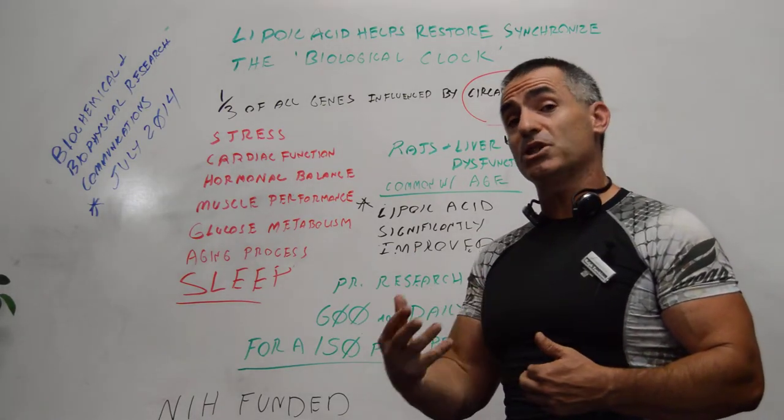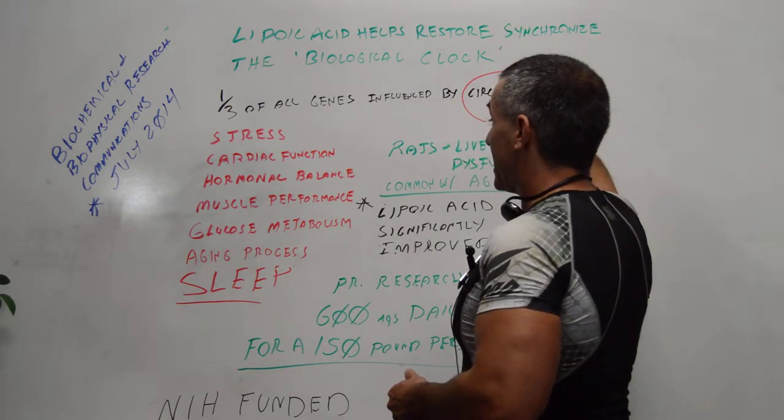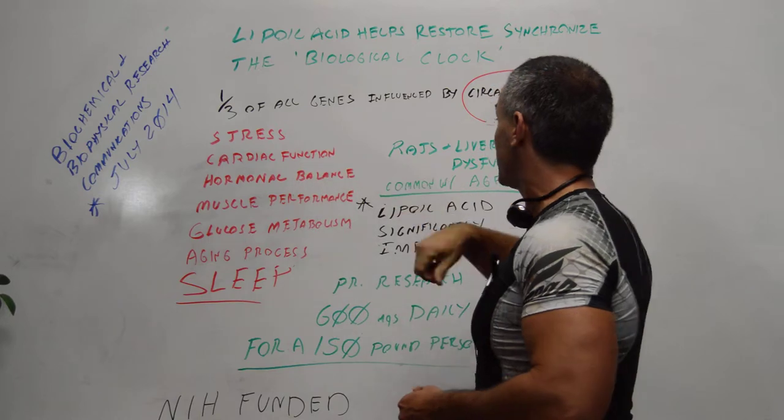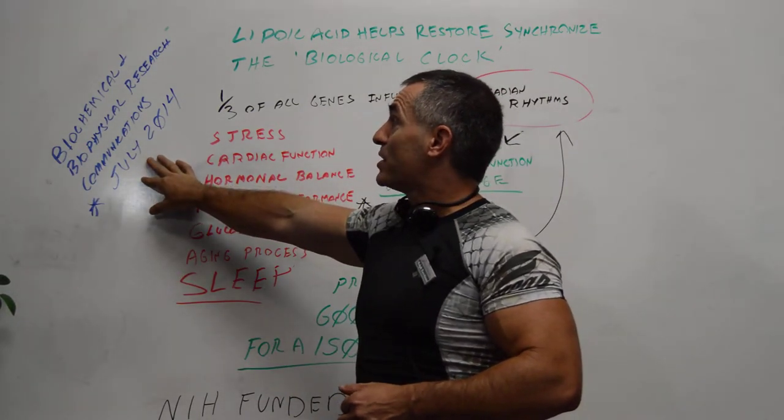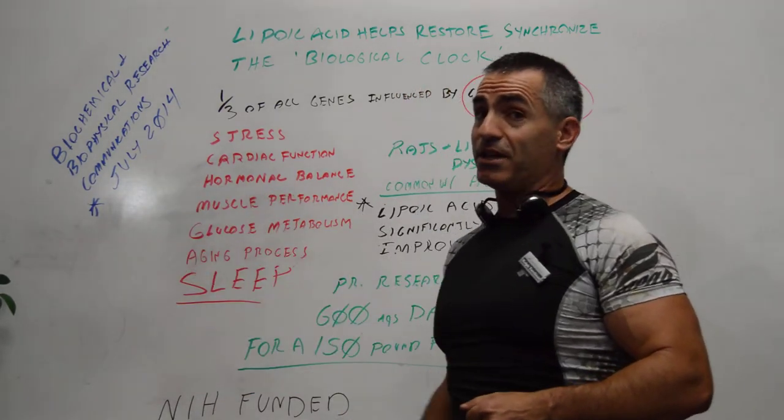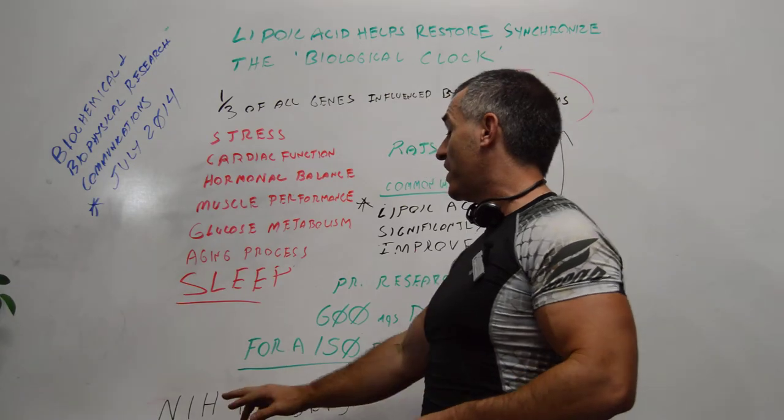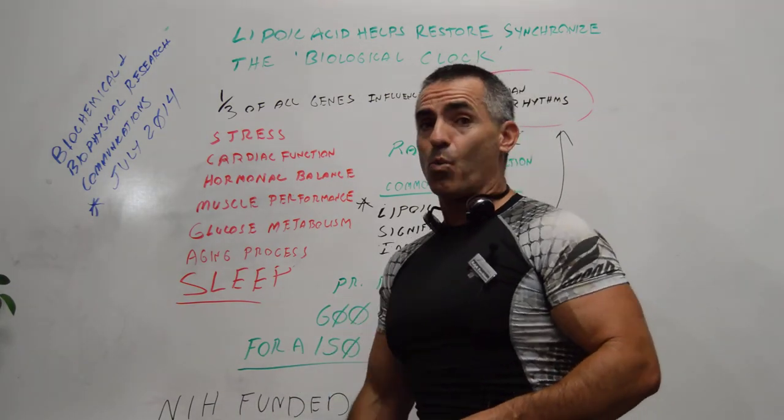Again, lipoic acid restores the circadian rhythm, helps with all these processes in the anti-aging process, helps fix liver dysfunction, and was published in the Biochemical Biophysical Research Communication in July 2014, and the research was funded partially by the National Institute of Health. Thank you very much once again.